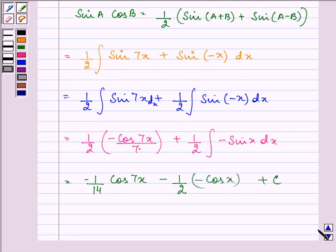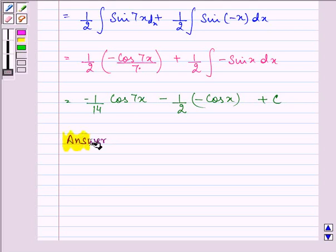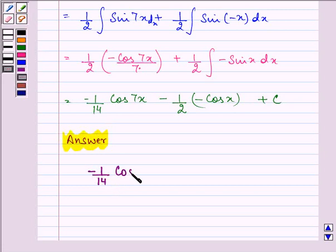The required answer will be minus 1/14 cos 7x plus 1/2 cos x plus C.